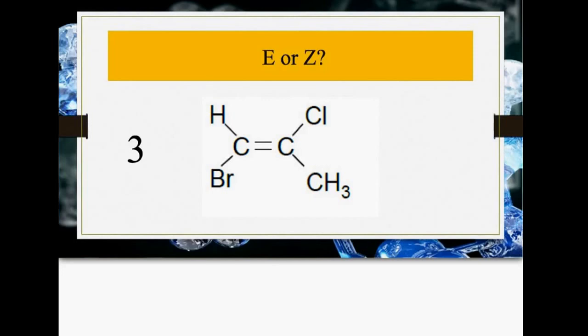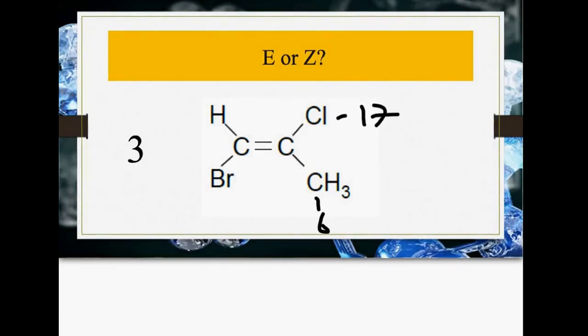This one's even more difficult. Have a go, pause the video. To work out which ones have high priority, you have to use the periodic table. Carbon's got a priority of 6, chlorine is 17, bromine is 35, and hydrogen is 1. You can see that the highest numbers are on opposite sides, so this must be E. This would be called E1-bromo-2-chloropropene.